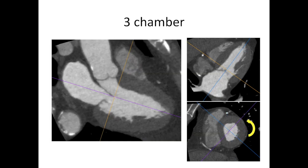The three-chamber view, as the name implies, lets you see three chambers — the left ventricle, the left atrium, and the left ventricular outflow tract. This isn't really a chamber of the heart like an atrium or ventricle, but it's very important so you can see the aortic valve, the aorta, the left ventricular outflow tract, and the association with the mitral valve. This is a very useful image for looking at function and measurements. To get from the two-chamber to the three-chamber, we turn the short-axis view slightly so that the left ventricular outflow tract and aorta come into view.